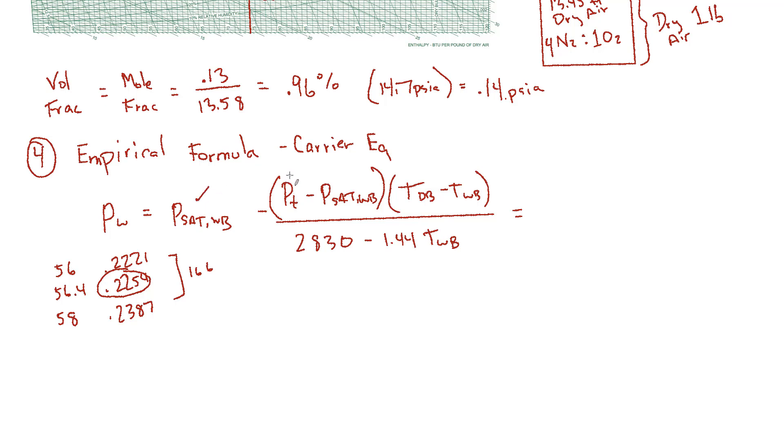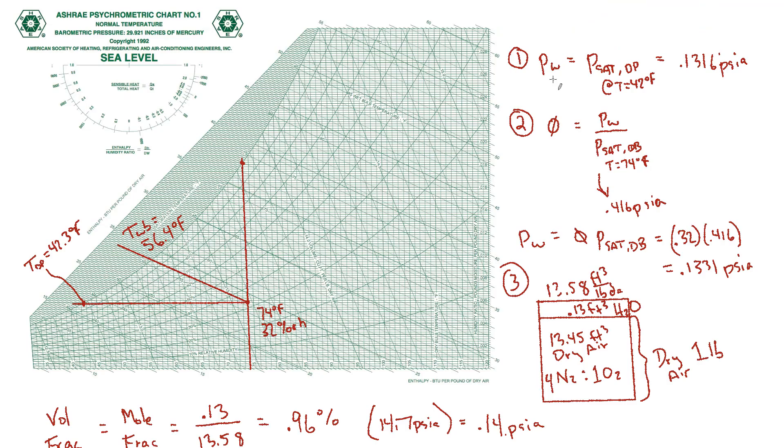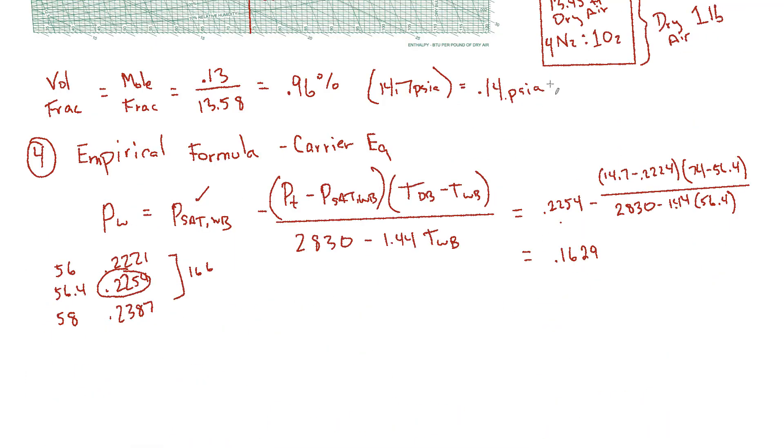The total pressure is atmospheric pressure. So 14.7. Let's go ahead and start plugging some of these numbers in. 0.2254. And I'm going to skip units because it's an empirical formula. 14.7 minus 0.2224 again, times that delta T. The dry bulb is 74. The wet bulb is 56.4. 2830 minus 1.44 times 56.4. That all turns out to be 0.1629, which is a bit higher than what we got on the other methods.